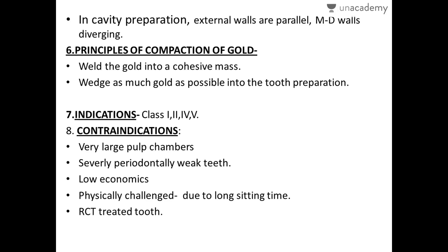In cavity preparation for gold restorations, the external walls are parallel — facial and lingual walls are parallel to each other — whereas mesial and distal walls can be diverging. The principles of compaction are: first, weld the gold into a cohesive mass, and second, wedge as much gold as possible into the tooth preparation, ensuring it is free of voids and microleakage.